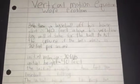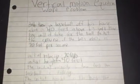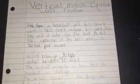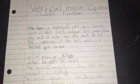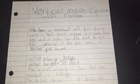This is the vertical motion equation word problem. The problem we came up with was: Bobby threw a baseball off his house which is 40 feet above his yard. How long will it take for the ball to hit the ground if the ball's velocity is 20 feet per second?